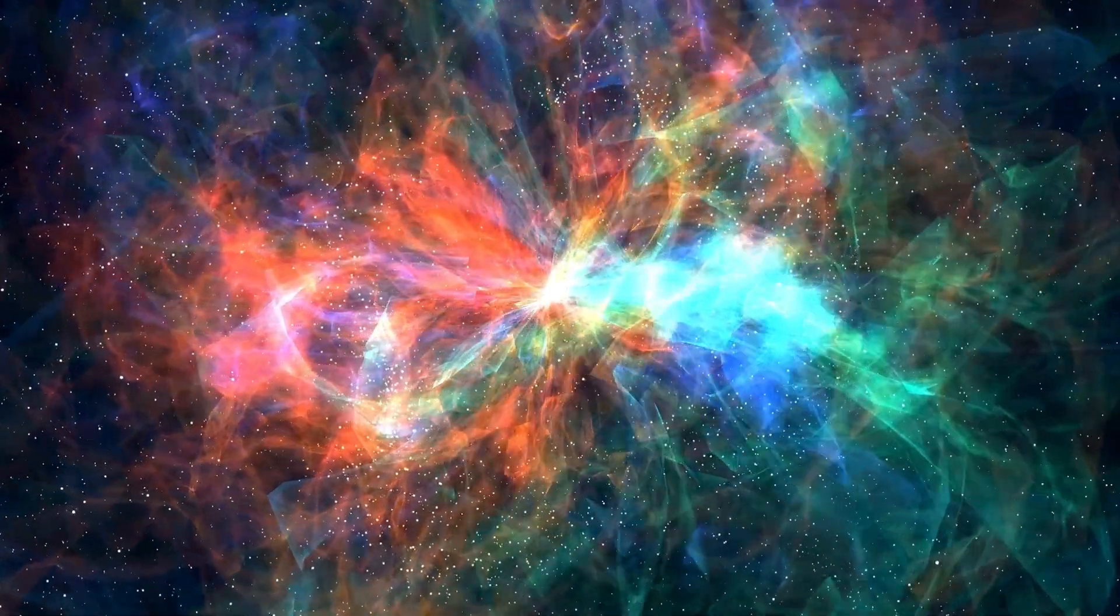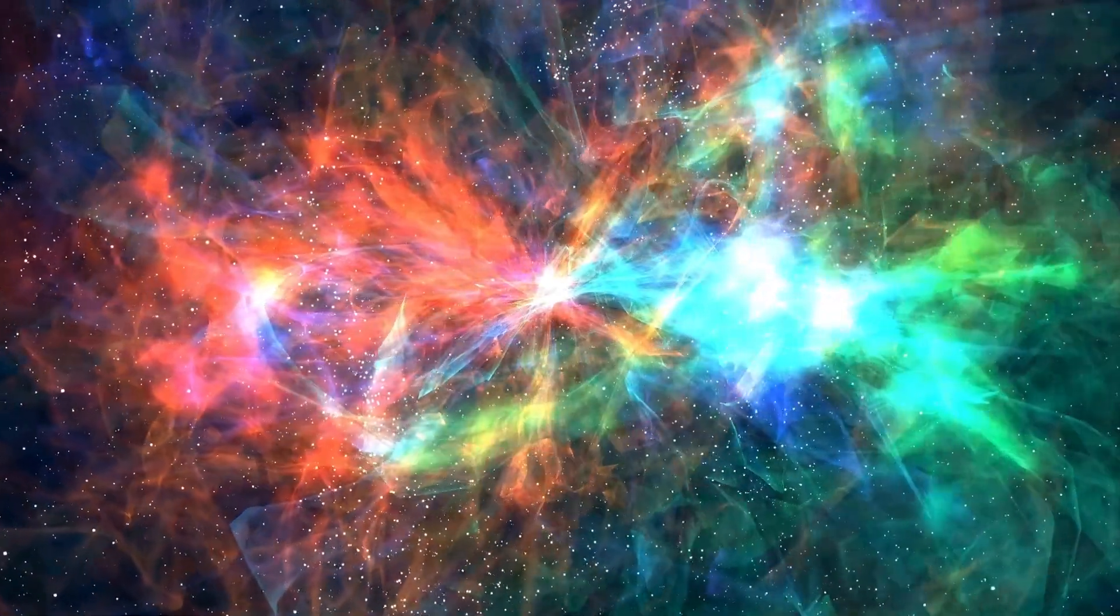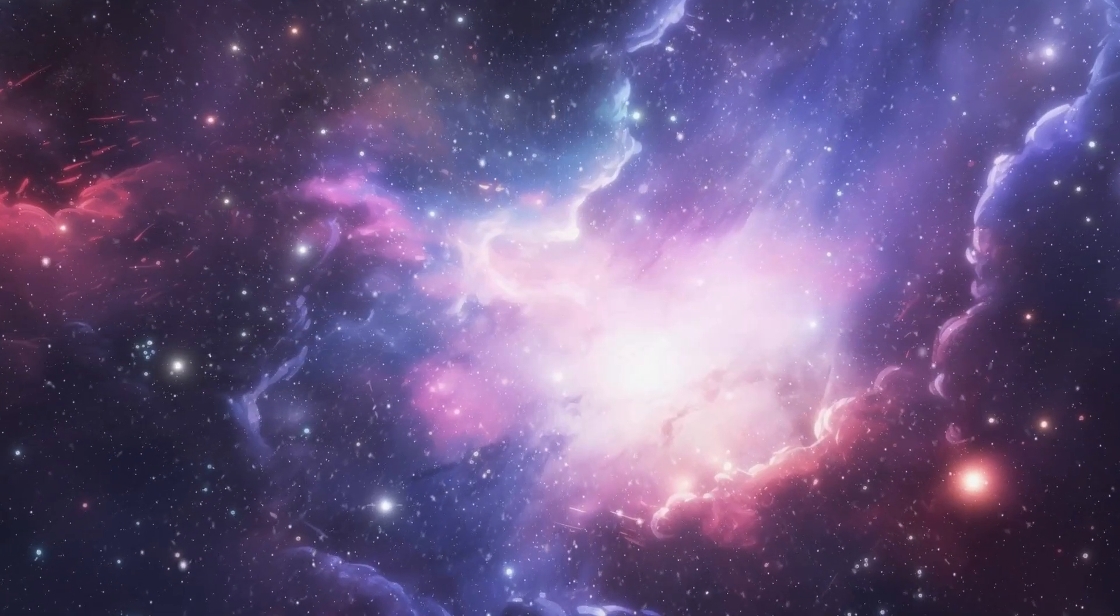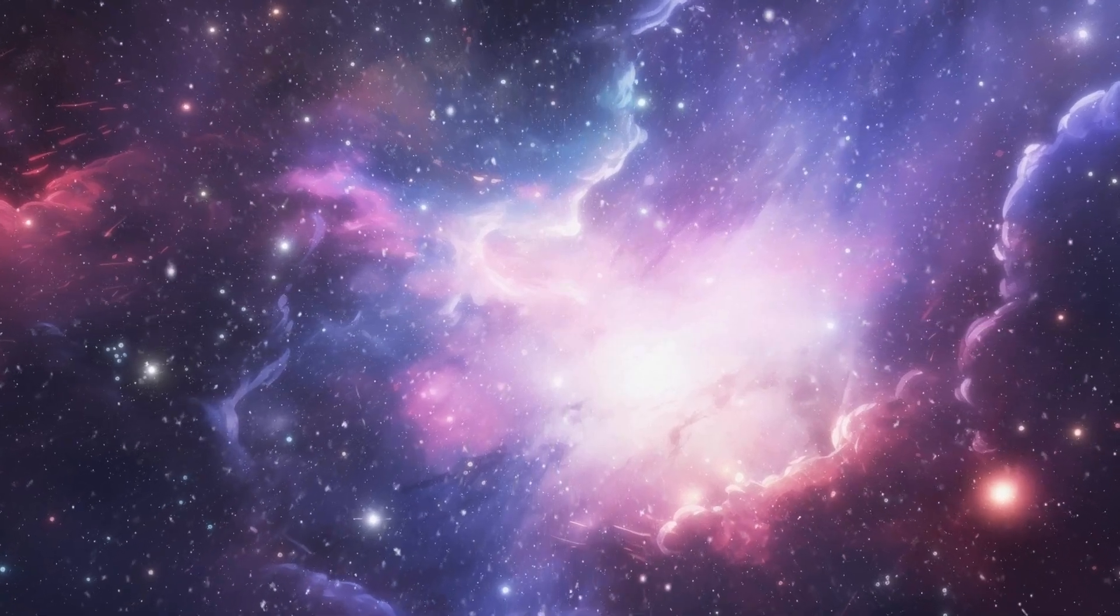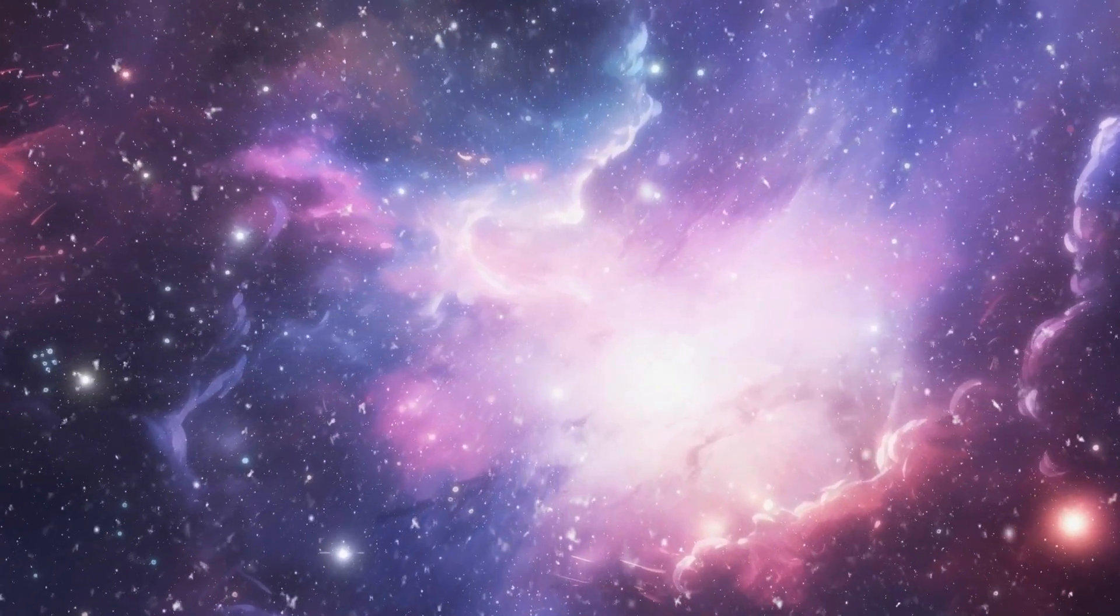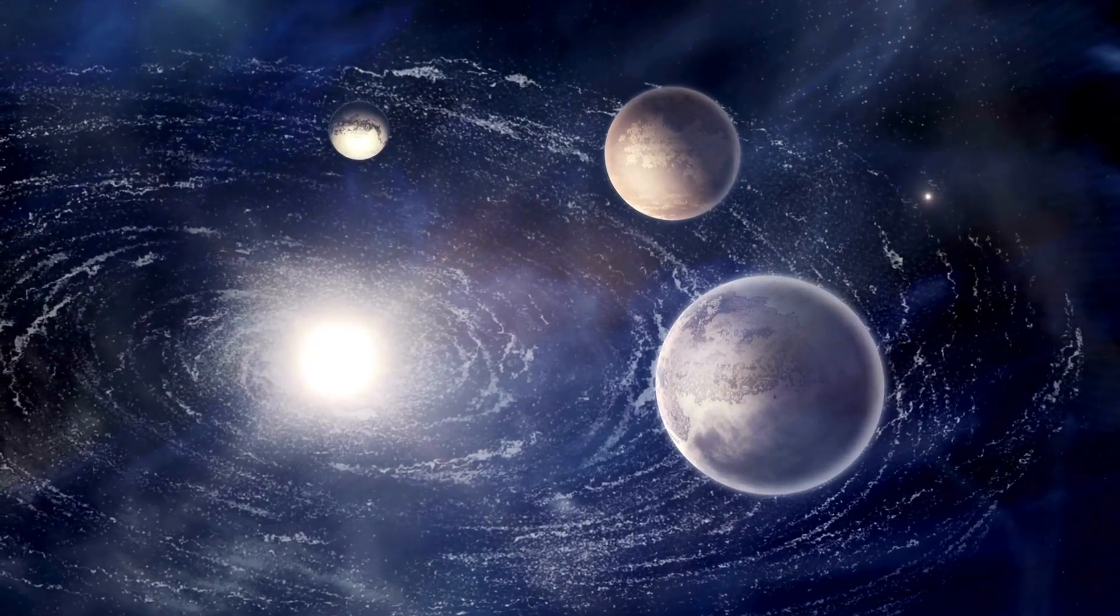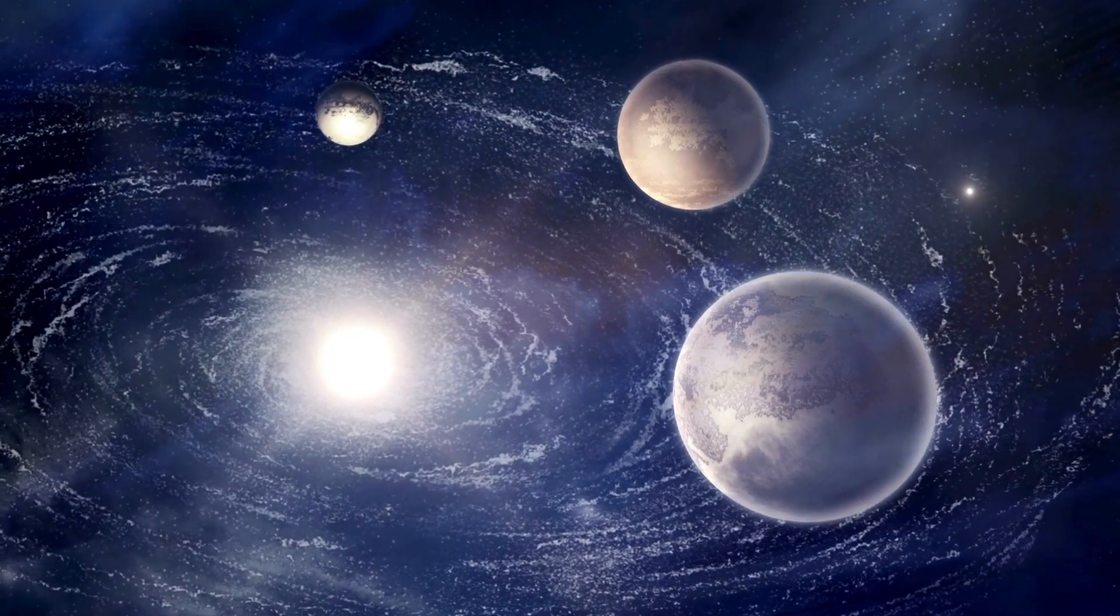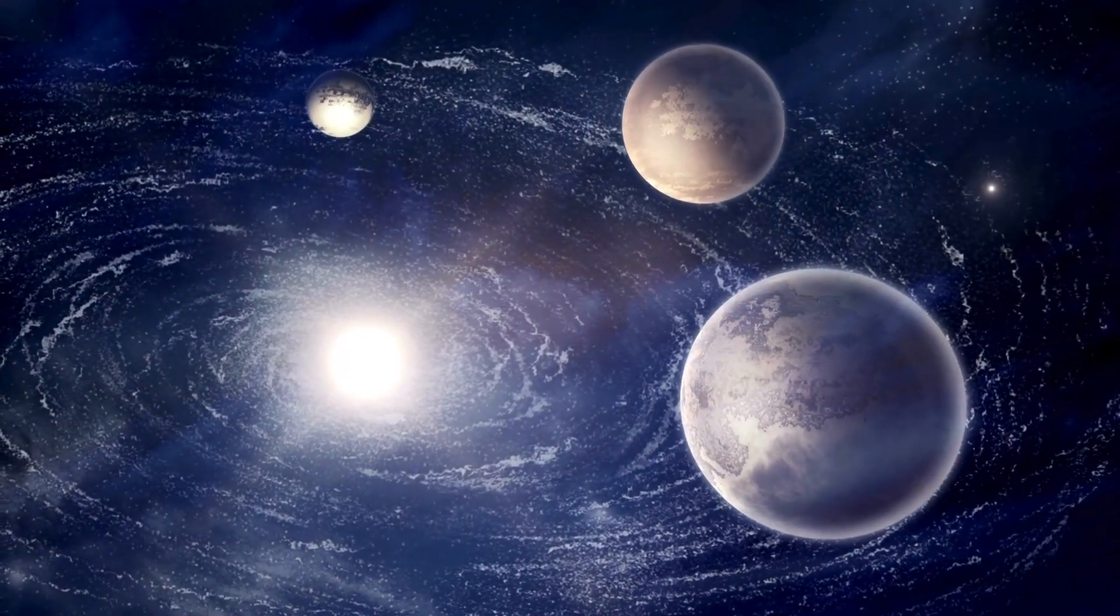Betelgeuse, also known as Alpha Orionis, stands out as one of the most striking and intriguing stars in the Orion constellation. Its remarkable variability in apparent magnitude, ranging from 0 to 1.6, marks it as a variable star. Although Rigel holds the designation of Alpha Orionis as the brighter star, Betelgeuse's unpredictability sometimes makes it appear brighter than Rigel.